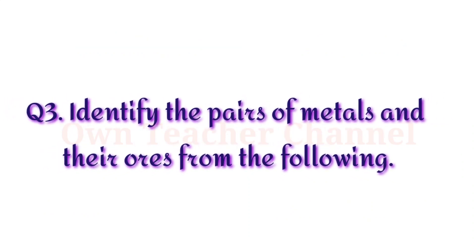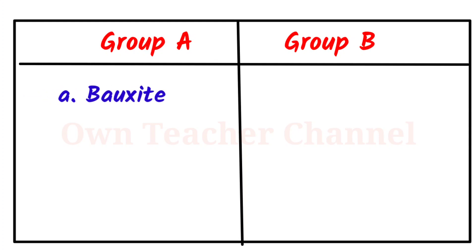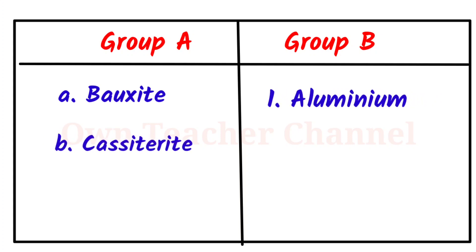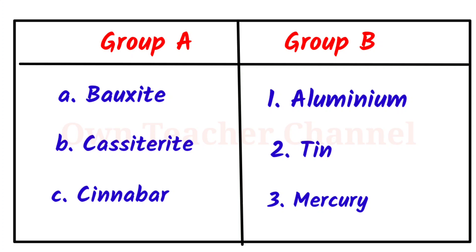Question 3: Identify the pairs of metals and their ores from the following. Group A and Group B: Bauxite — Aluminium. Cassiterite — Tin. Cinnabar — Mercury.